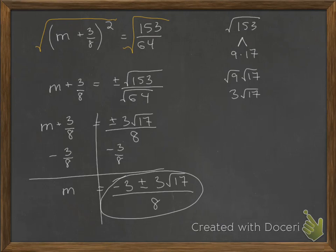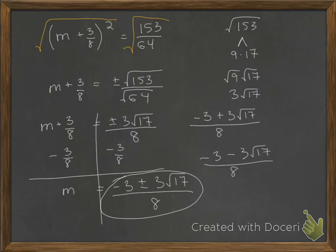That is our final answer. If you need to split it into two different answers, you could write negative 3 plus 3 square root of 17 over 8, and negative 3 minus 3 square root of 17 over 8.